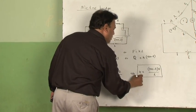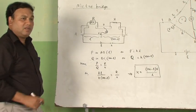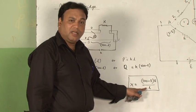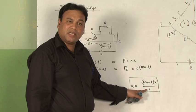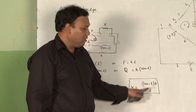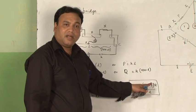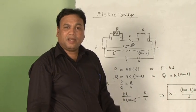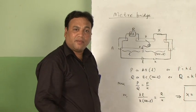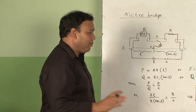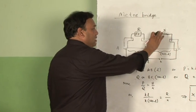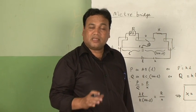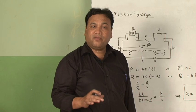This equation X = (100 - L)R/L is used to find the value of X. If the value of R is changed, then accordingly the value of L also changes — the balancing length changes. Take 5 or 6 readings and take the average value of X. You have to select the values of the resistors in such a way that they are of the same order; otherwise the sensitivity of the bridge will not be there.